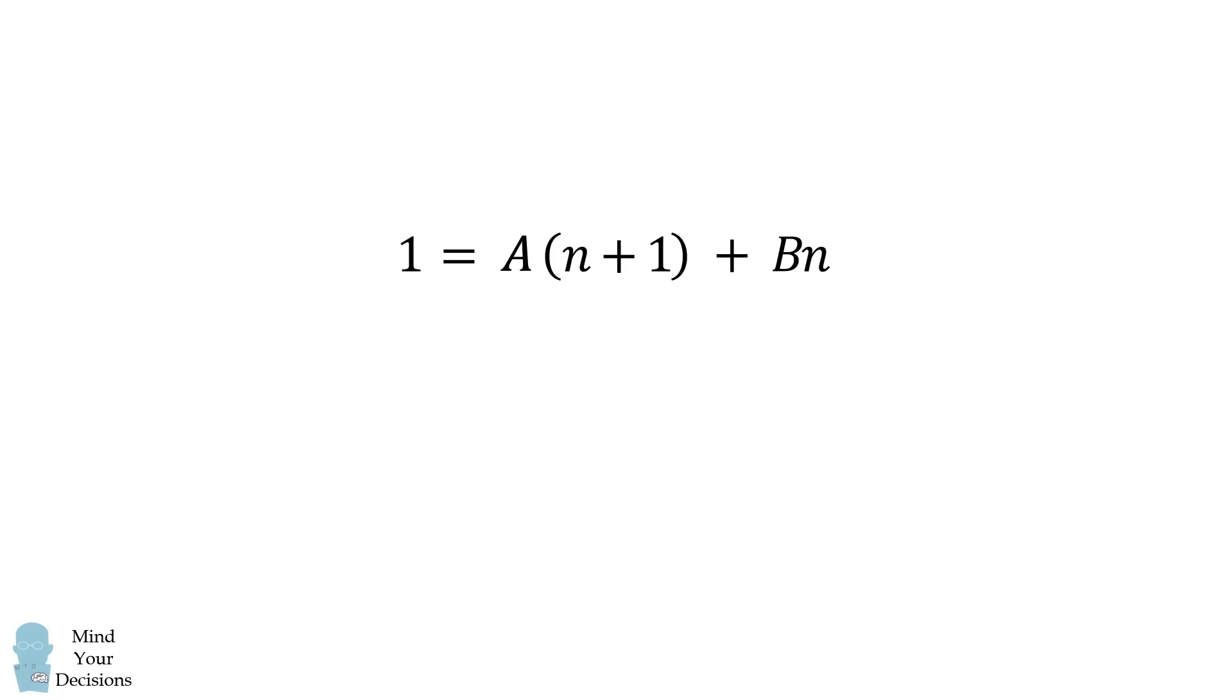We now have this equation. We'll distribute the a term, and then we'll collect the n terms. We'll factor in n to get n multiplied by a plus b. On the left-hand side, we have 1, which is equal to 1 plus n times 0.